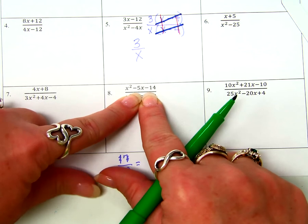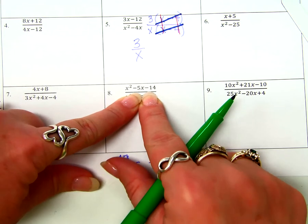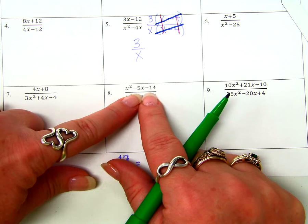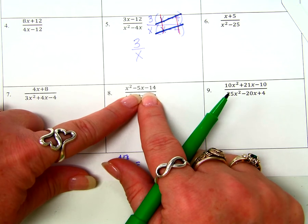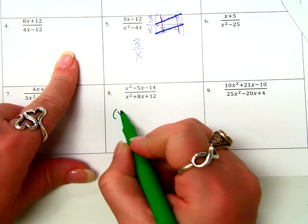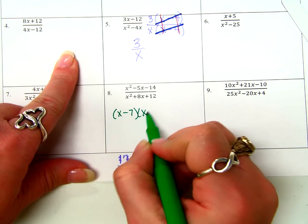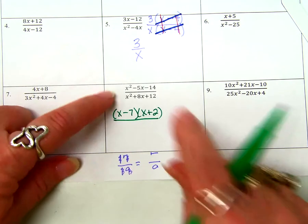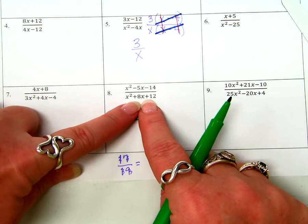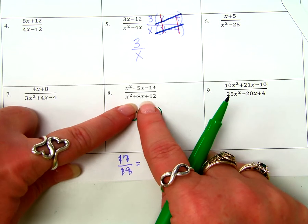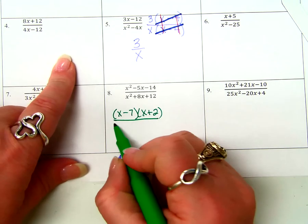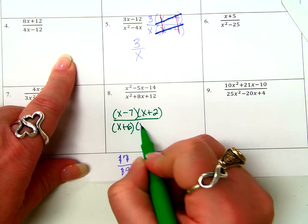Okay? If you were allowed to start canceling X squareds and canceling Xs and stuff like that, that would be the same as if I simplified this fraction right here by crossing out the 1's and crossing out this line over here and getting an answer that looked like this. That's silly, isn't it? That's a ridiculous little child answer. We cannot do that.